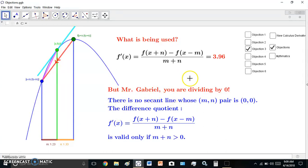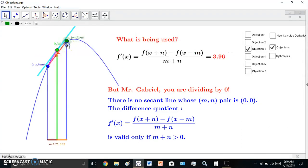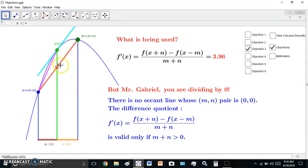And, Mr. Gabriel, you're dividing by zero. No. There is never division by zero. Not even when that happens. Why? Because none of these secant lines have an m-n pair that is zero, zero. Otherwise, it would be a point, wouldn't it? So then we'll get to another objection, which is connected to this in just a little while.